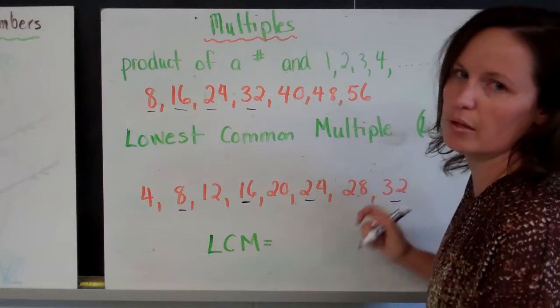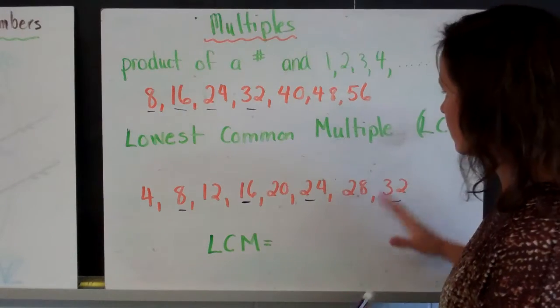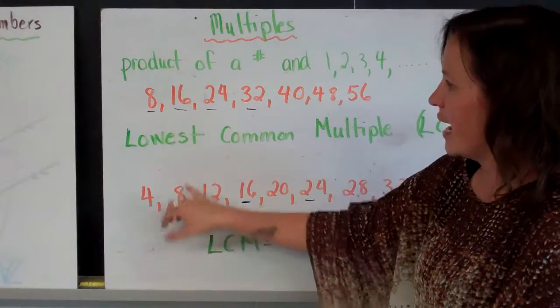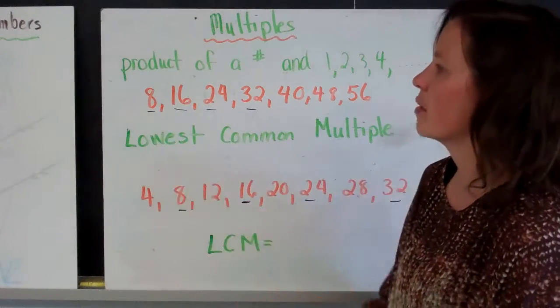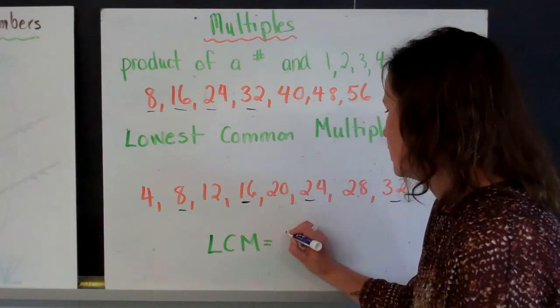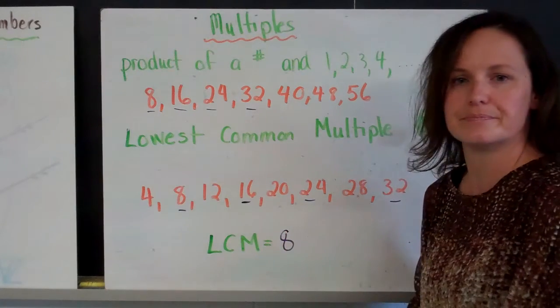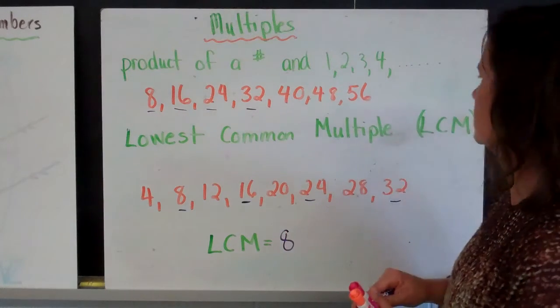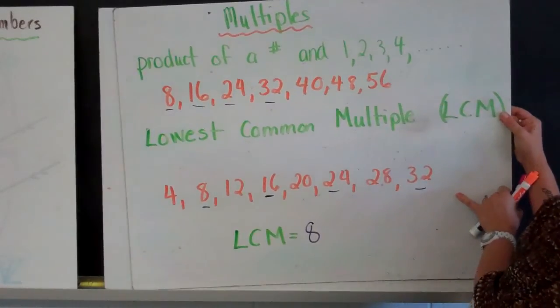But I'm looking for the lowest common multiple. So if I look at my two lists, 8 and 8 are the lowest common multiple of both those numbers. So I would write LCM for lowest common multiple is 8. So again, practice your multiplication tables. Know your multiplication facts.